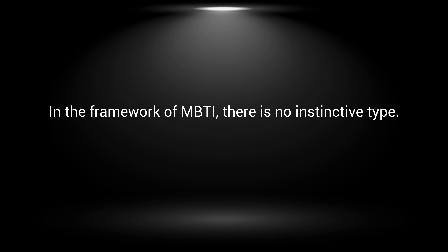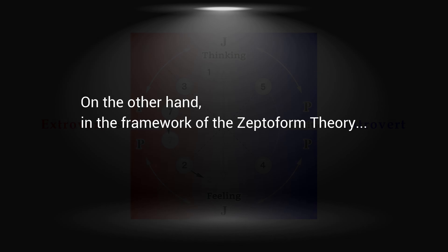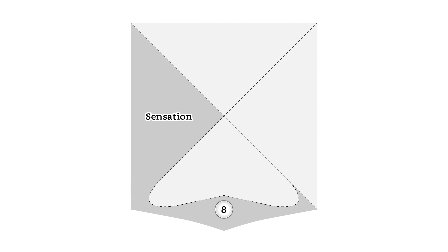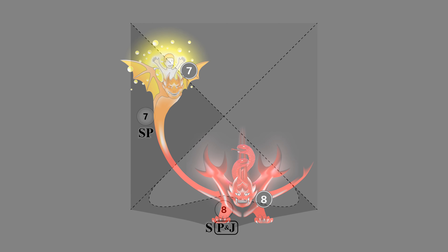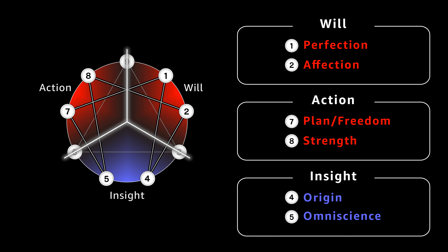In the framework of MBTI, there is no instinctive type. On the other hand, in the framework of the zeptoform theory, the instinctive type is represented by Type 8. In terms of sensation and intuition, Type 8 is a sensation type — in this aspect, Type 8 tends to resemble Type 7. Both Type 7 and Type 8 are extroverted sensation types. Also, they are both action types as discussed in Chapter 1. The 6 enneatypes among the 9 enneatypes are divided into will types, action types, and insight types. The characteristics of action types are related to extroverted sensation.